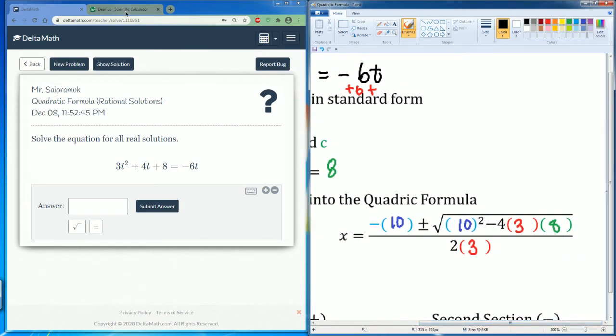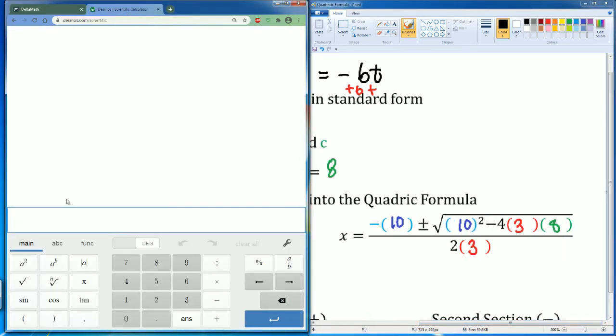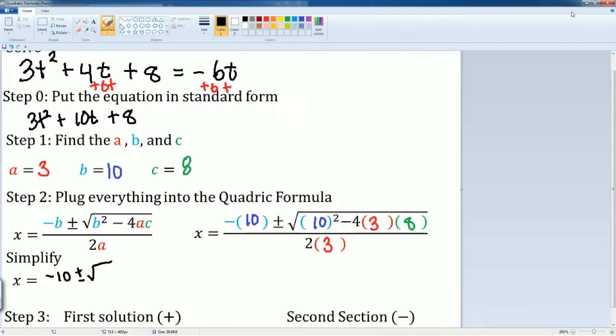I'm going to plug that in into Desmos here. So I have 10 squared minus 4 times 3 times 8 and I saw that is 4. So it's going to be radical 4 divided by 2 times 3 times 6.